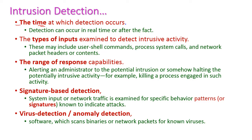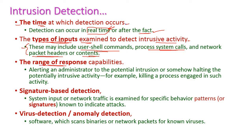The first technique is the time at which detection occurs — that is, whether detection happens in real time as intruders enter the system, or after the fact. The second is the types of input examined to detect intrusive activity, which includes user shell commands, system process calls, and network packet headers or contents. The range of response capabilities includes alerting the administrator to the intrusion, or halting the intrusive activity by identifying and killing the offending process.